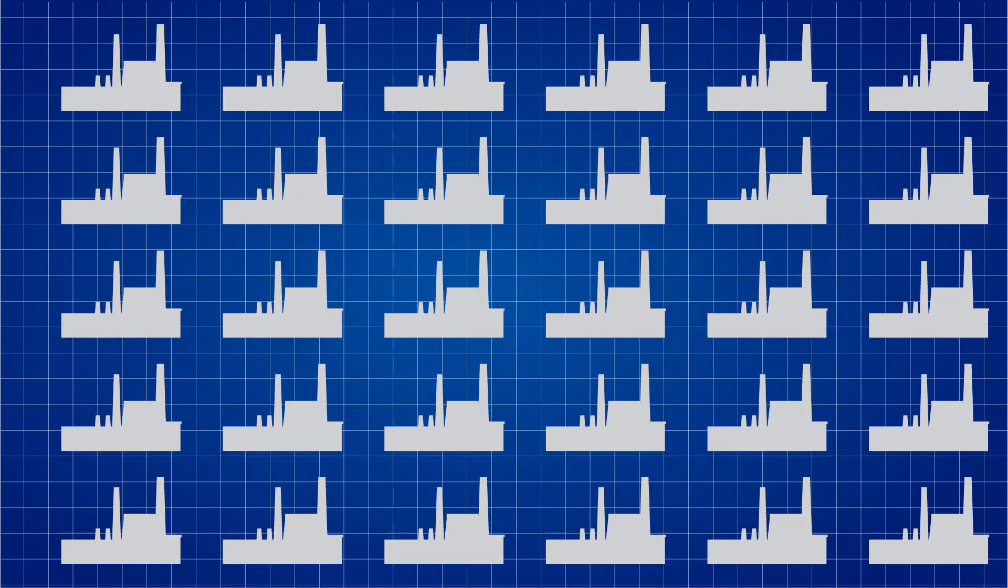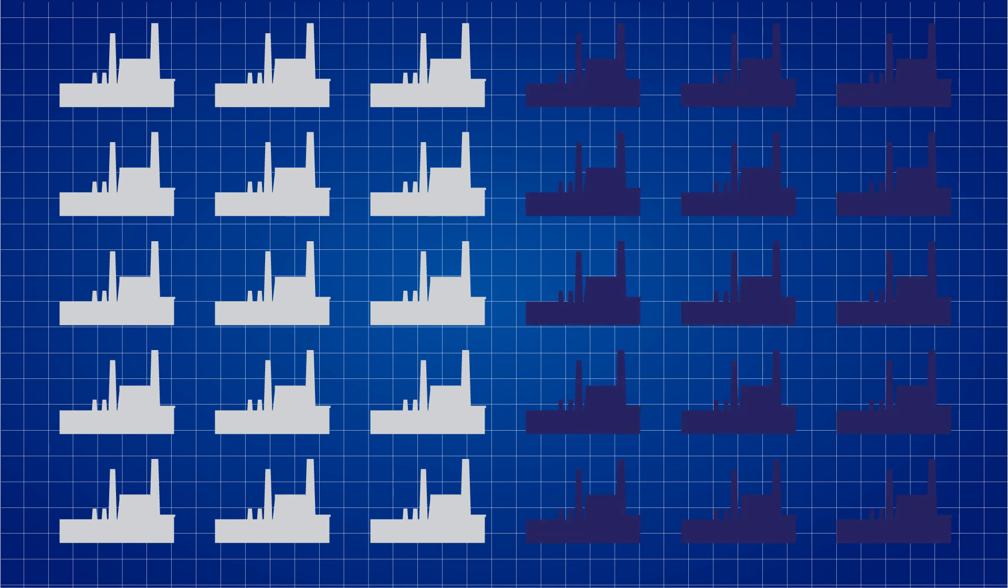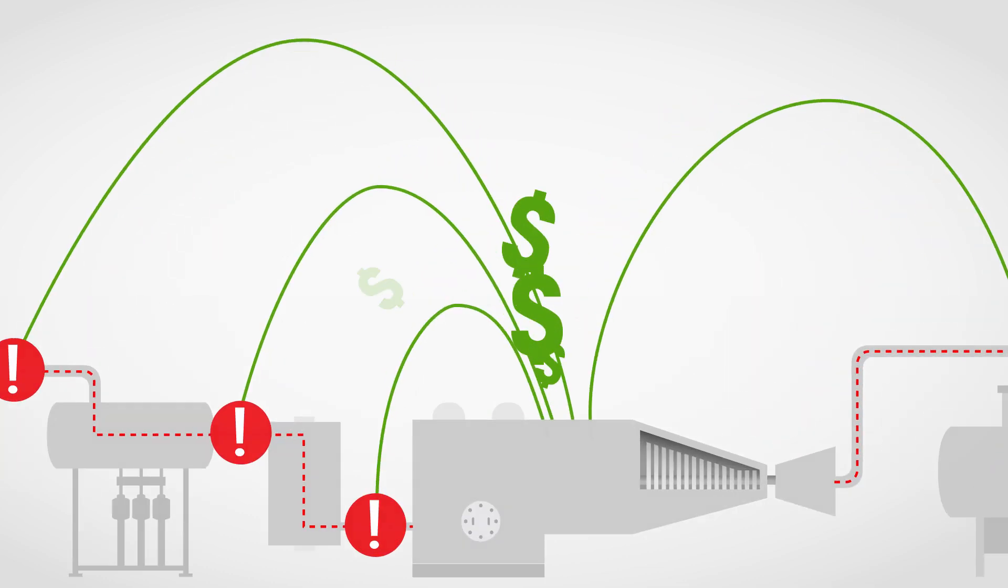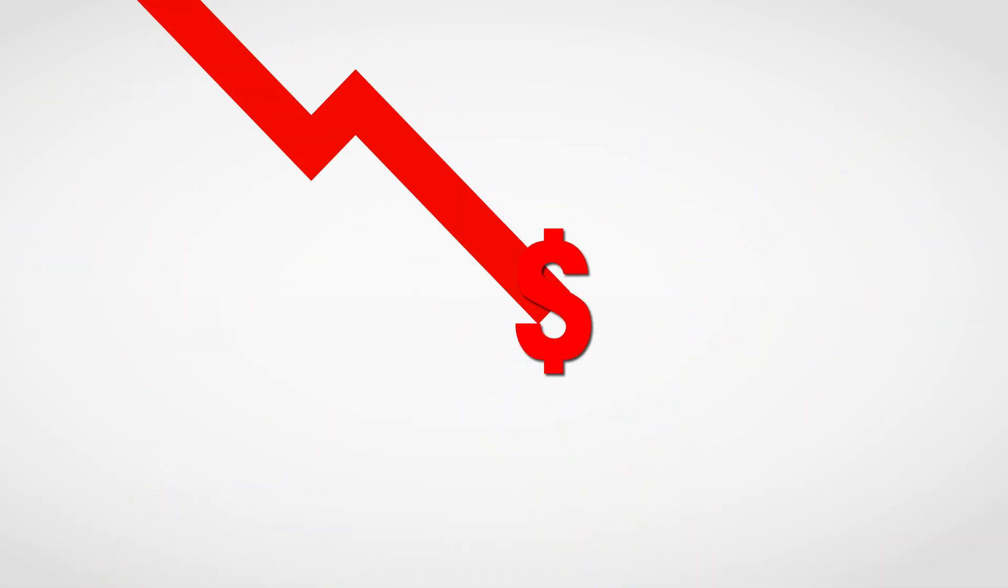In power plants, approximately half of unscheduled shutdowns can be traced to water cycle chemistry issues, which involve costly repairs and lost operating revenue that can never be recovered.